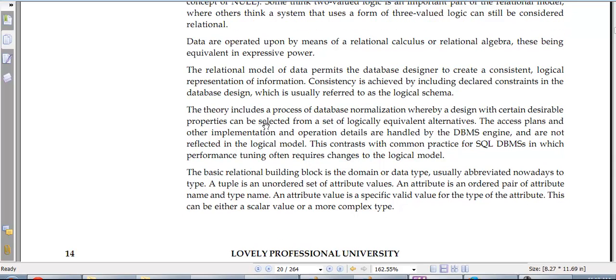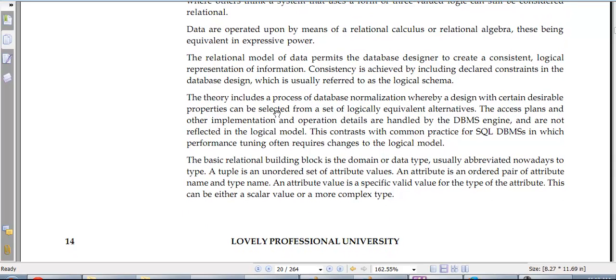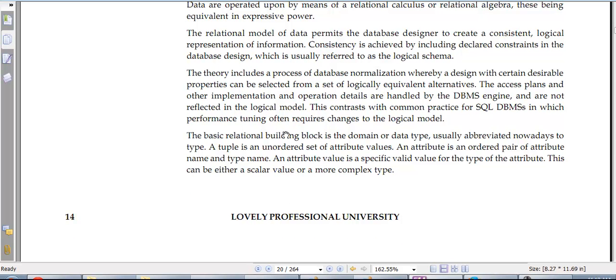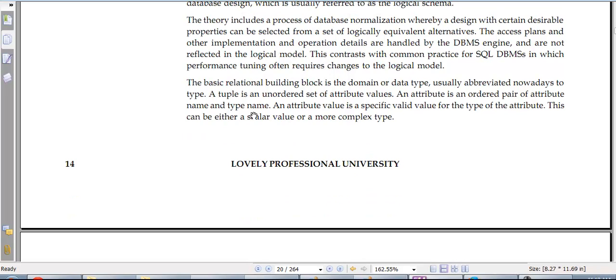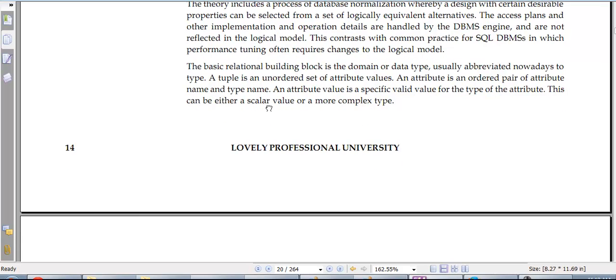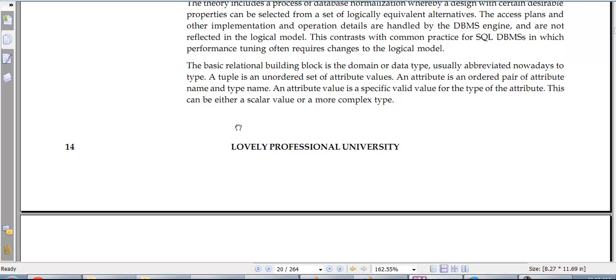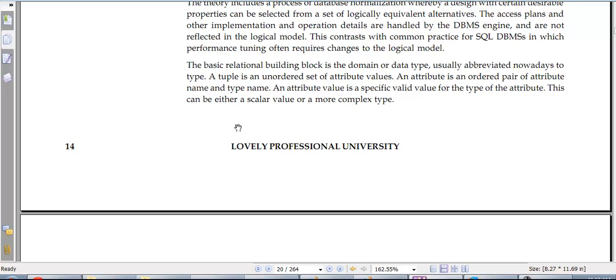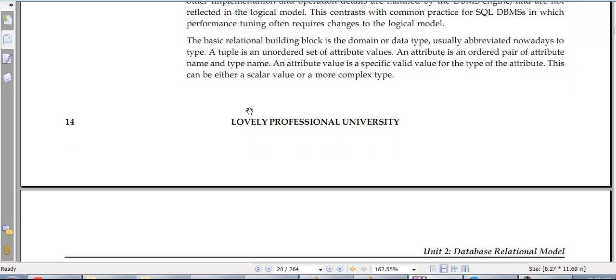Data is operated by means of relational calculus or relational algebra, those being equivalent in expressive power. The relational model of data permits data by design to create consistent logical representation of information. Consistency is achieved through declarative constraints. The theory includes a process called database normalization with certain desirable properties to create logical equivalent alternatives. The access plans and other implementations are handled by DBMS engines. This contrasts with common practice in SQL, in which performance tuning requires changes to the logical model.